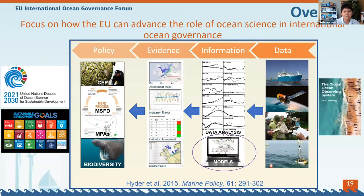Let's think about the role of ocean science in international ocean governance. This graph shows where ocean science sits in this whole framework. As scientists, mostly what we're interested in is going out to sea and collecting data, building models and so forth — we're really interested in the data and information part. But what we need to do to underpin ocean governance is turn that information into evidence, which can then be used to address policy questions, which could then lead into the international ocean governance that's needed.